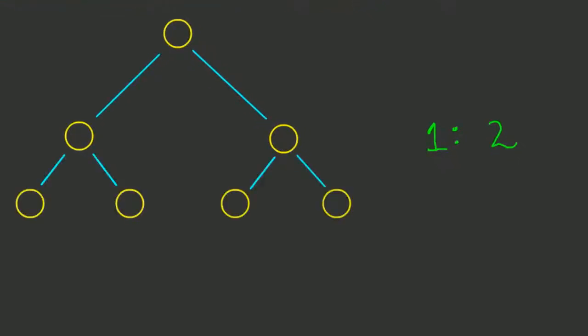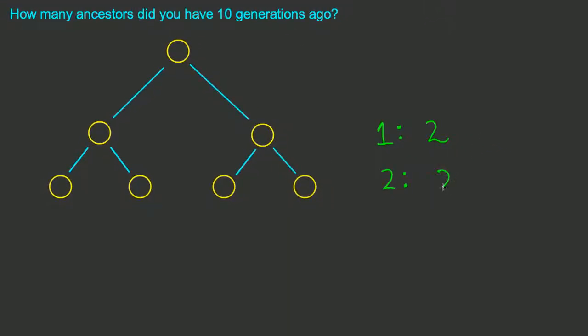And so there's a doubling effect. In the second generation, I have my two parents times the two parents that they each had. So effectively, I have four ancestors in that second generation. By the way, those are my grandparents, I'm sure you all have that figured out.